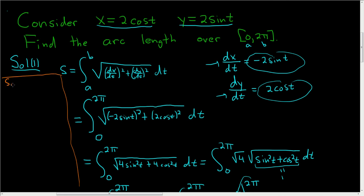So solution 2: notice we can divide x by 2, so that x/2 = cos t, and we can divide y by 2, so that y/2 = sin t.